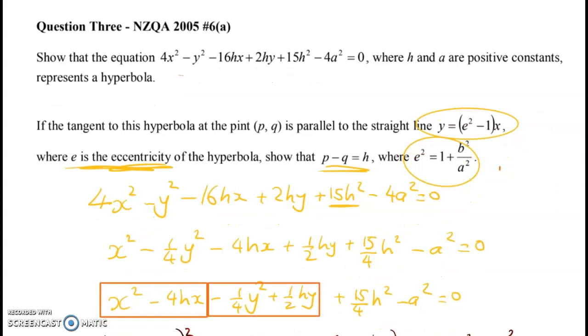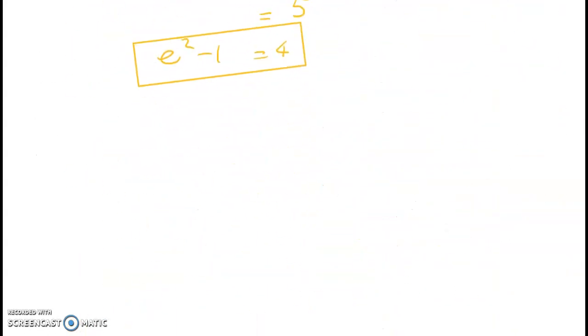What were we asked for? Well the tangent has to be parallel to the straight line y equals blah blah blah. All right looks bad but actually y is equal to 4x. So tangent is parallel to y equals 4x. So what we're doing now is straightforward, we're just finding dy by dx and we're setting it equal to 4, and we need to show that where that is true p minus q is equal to h. So let's go back and find dy by dx.